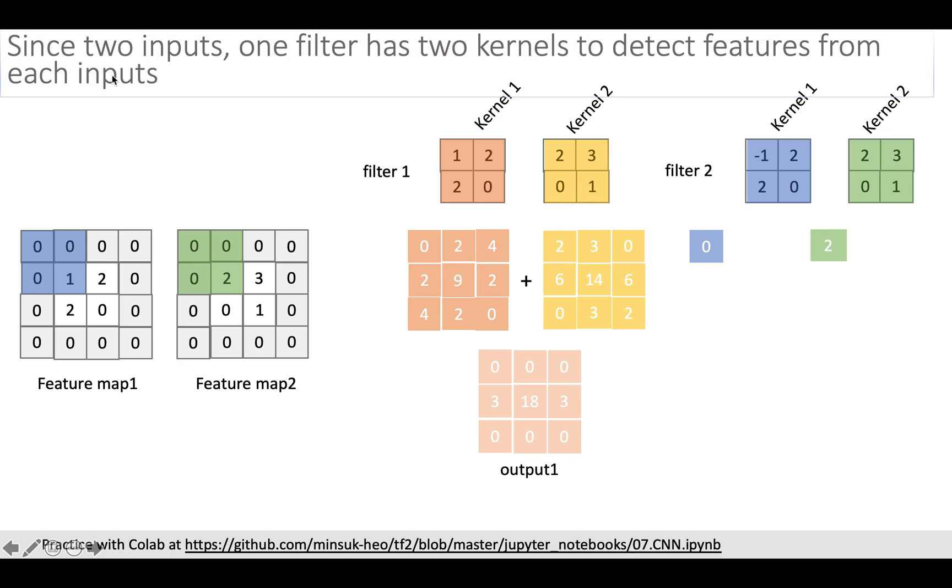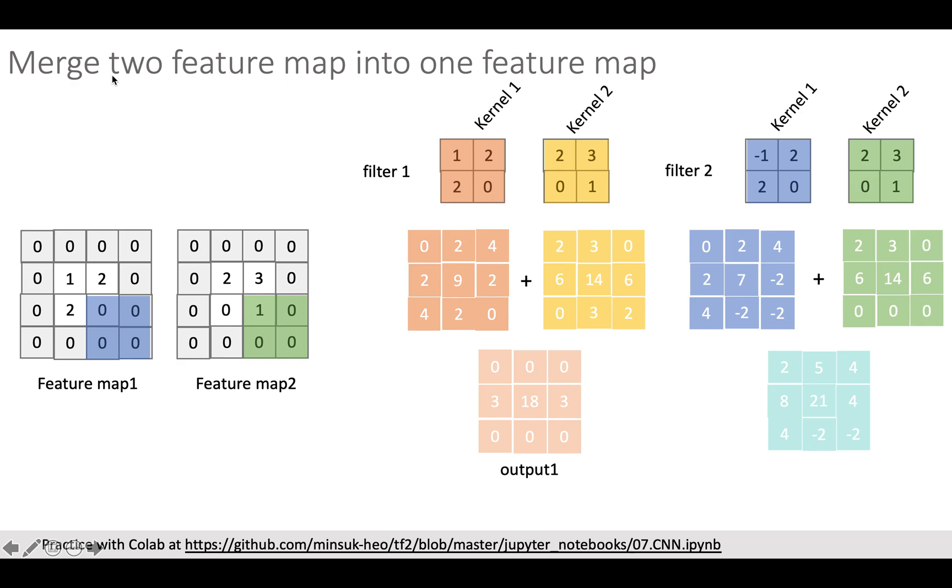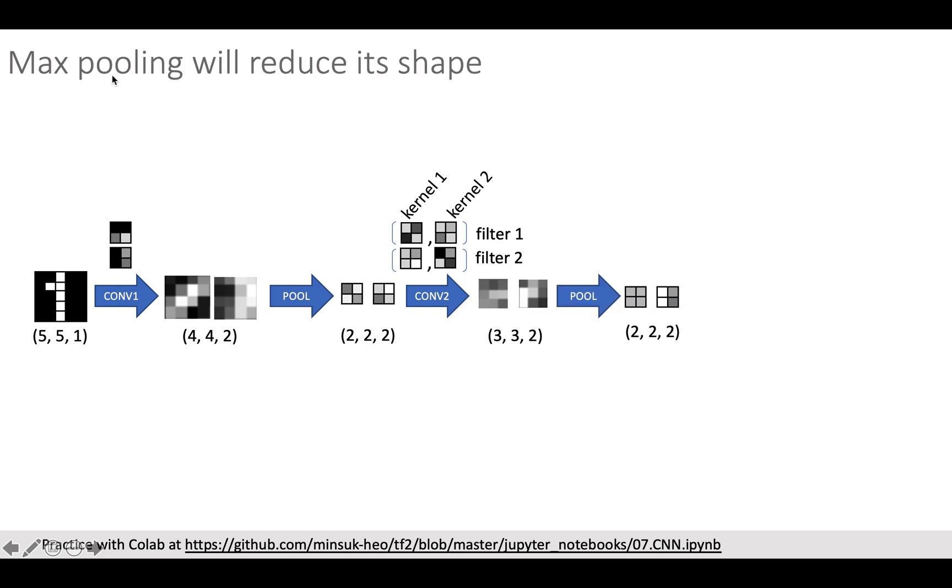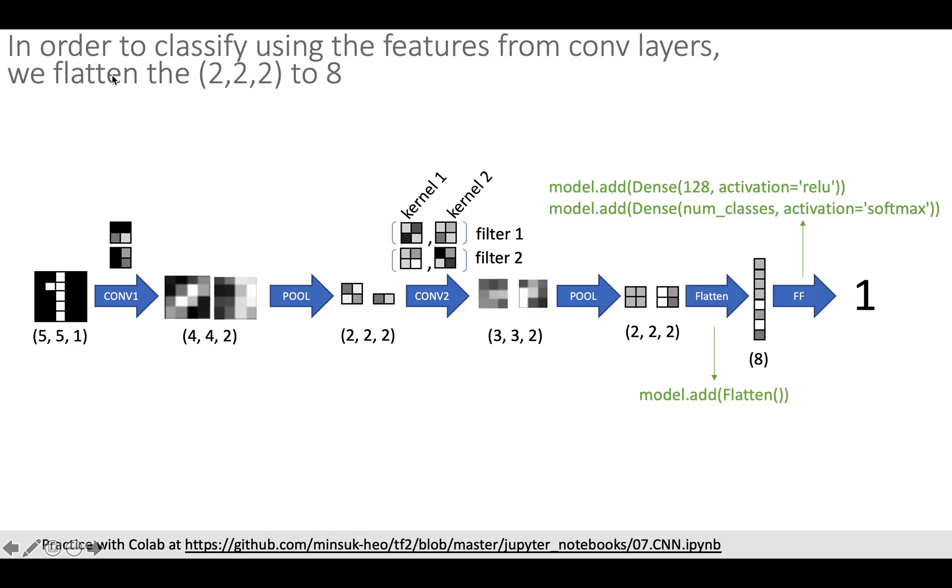And then filter 2 will send kernel 1 to feature map 1 and send kernel 2 to feature map 2. And again run this kernel on the feature map from top left to bottom right, just like this. Then add two outputs, then add bias, then apply ReLU activation. Now we have two output feature maps. Congratulations, you just manually calculated the most important and most difficult part of the CNN. So now we have two feature maps. After the pooling layer the size will be 2 by 2.